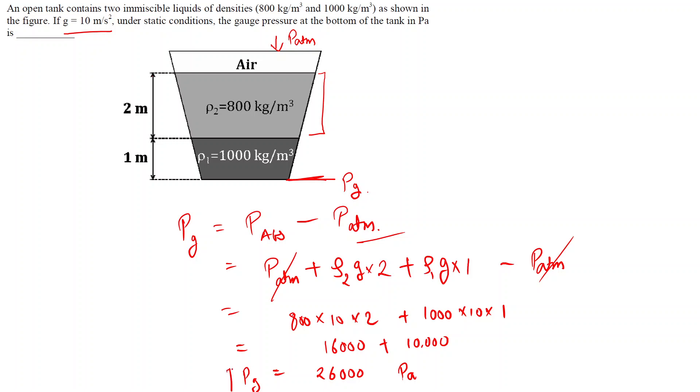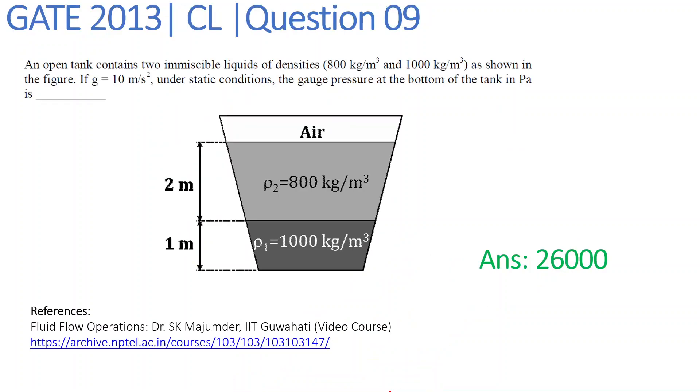So this will become 16,000 plus 10,000, that is equal to 26,000 pascal. So the gauge pressure at the bottom of the tank is 26,000 pascal. We can write the final answer as 26,000.